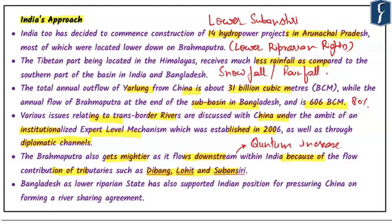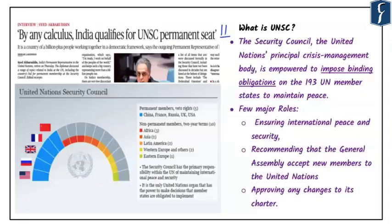We have many solutions available and need to implement our approach correctly to put enough pressure on China. Page number 11 of the newspaper presents an interview of Syed Akbaruddin, India's permanent representative to the United Nations, who is about to retire. One of the consistent demands from India is to make the United Nations Security Council more democratic, and hence there is a continuous debate about India's case for permanent membership, which is important from the perspective of the UPSC examination.